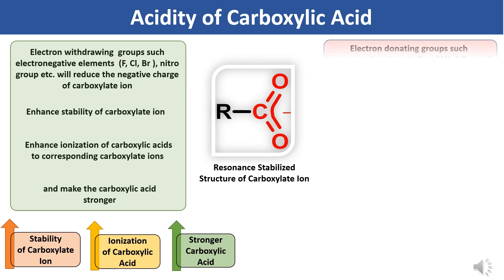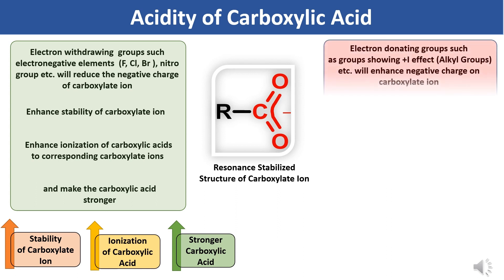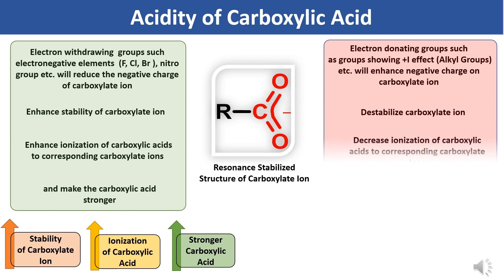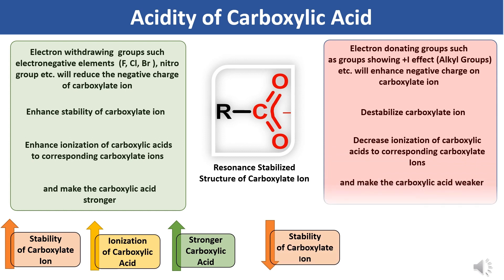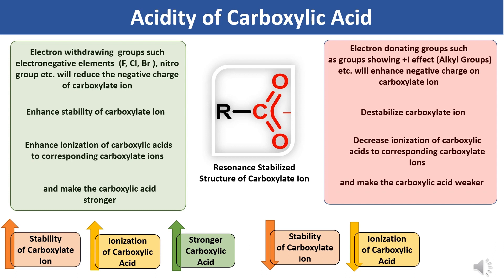Now let's see the effect of electron donating groups on the strength of carboxylic acids. Groups showing the +I effect, for example alkyl groups, will enhance the negative charge on the carboxylate ion. Thus these groups destabilize the carboxylate ion and decrease ionization of carboxylic acid. By this way, electron donating groups reduce the ionization of carboxylic acid into the corresponding carboxylate ion and make the carboxylic acids weaker.